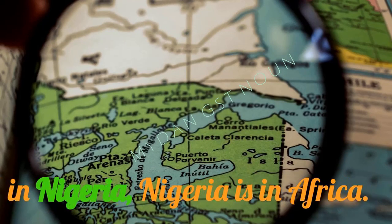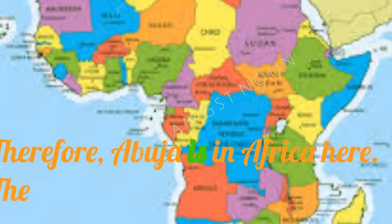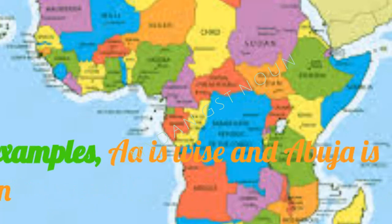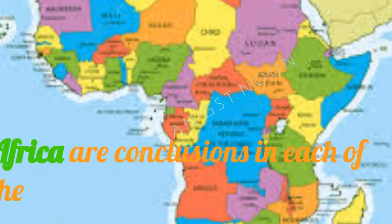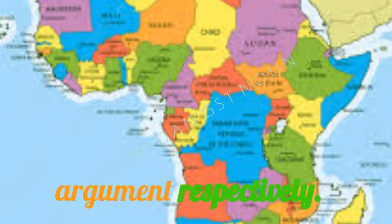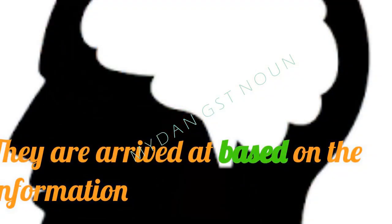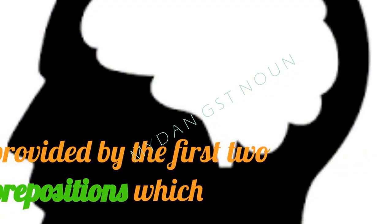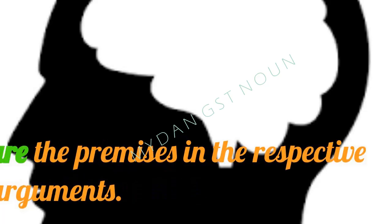2. 'Abuja is in Nigeria. Nigeria is in Africa. Therefore, Abuja is in Africa.' Here, the third proposition in each of the two examples — 'Aina is wise' and 'Abuja is in Africa' — are the conclusions in each argument respectively. They are arrived at based on the information provided by the first two propositions, which are the premises in the respective arguments.